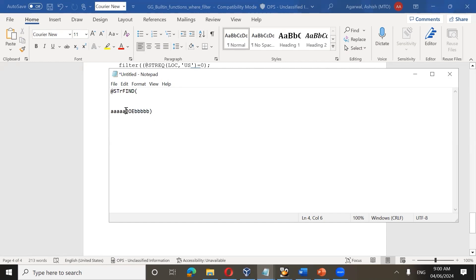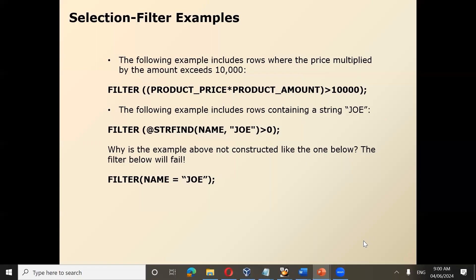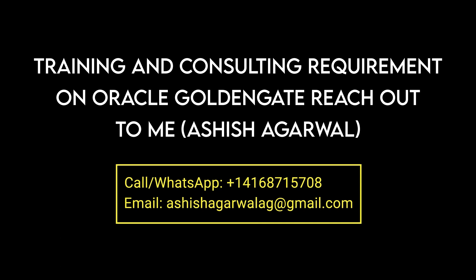However, in the third part, it will look for the exact string as Joe. So if there is any prefix or suffix before it, it won't be exact match. So in the third point, it is looking for an exact match. However, in the second string find function, it is trying to find a string inside a particular string. So there can be any prefix or suffix. So it is not looking for the exact match, but it is just looking for a string inside a string. So that is the difference between second and third.